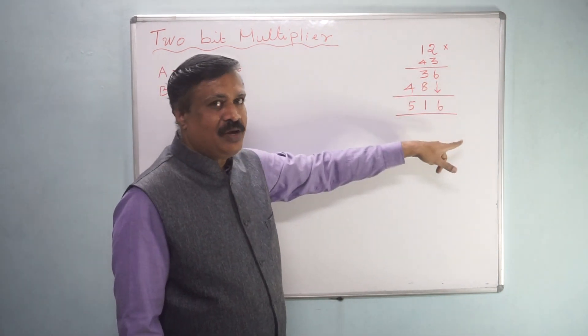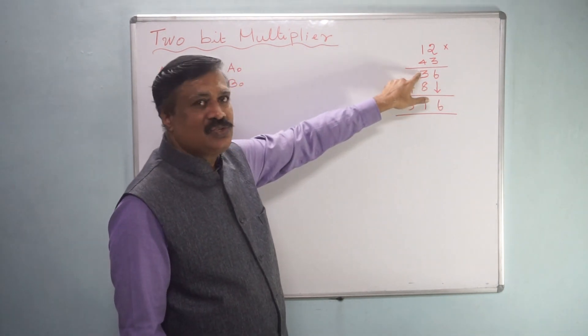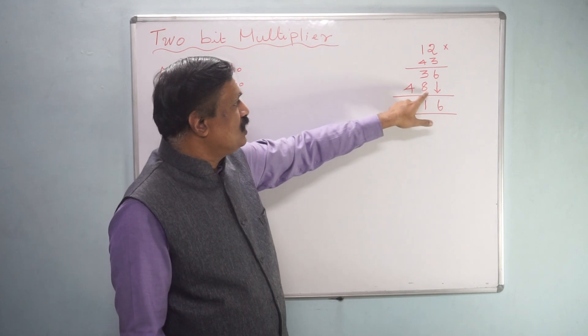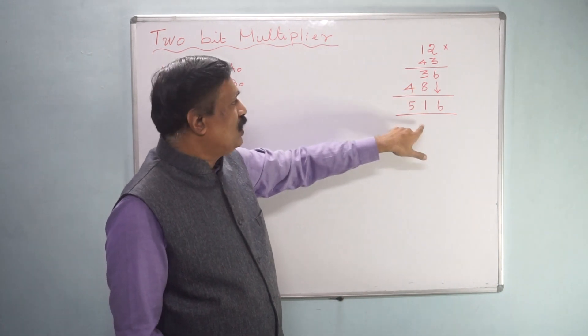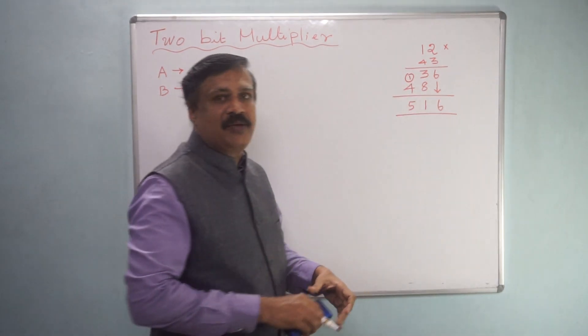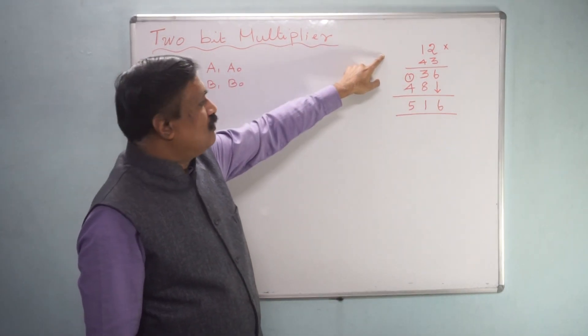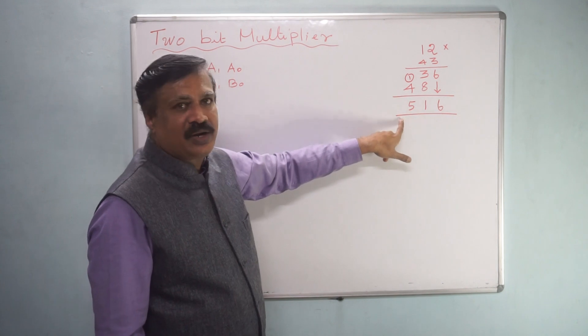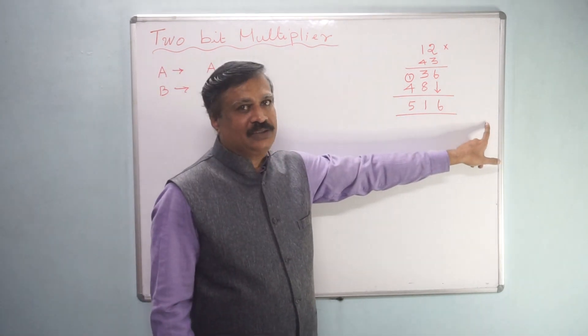After that you are multiplying 4 by 1 and you are writing here. After that 6 is directly coming and you are adding this and this. 8 plus 3 is 11, 1 you are writing and 1 you are taking as a carry to the next digit. After that you are adding these 2 and you are getting the final product.